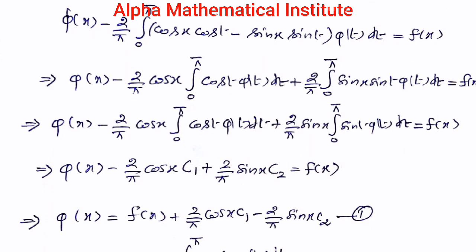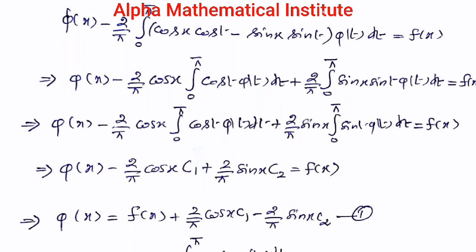This can be rewritten as phi(x) minus (2/π) cos x times the integral from 0 to π of cos t · phi(t) dt, plus (2/π) sin x times the integral from 0 to π of sin t · phi(t) dt, equals f(x). Since integration is with respect to t, the terms cos x and sin x can be taken outside the integrals.